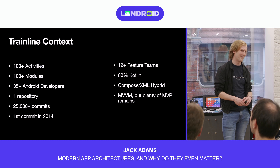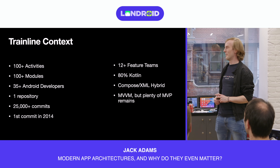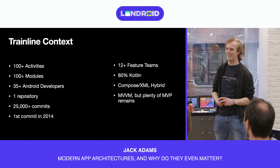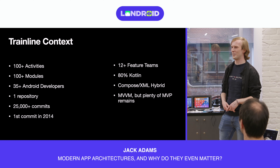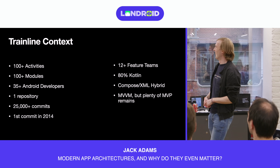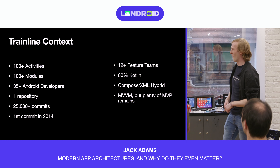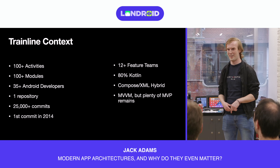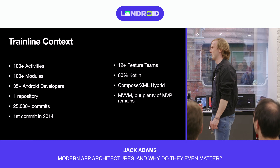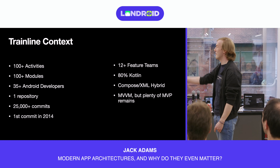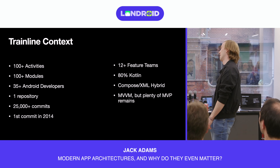I mentioned context is important, so let me give you a bit of context about Trainline. I opened our project this morning — I stopped counting after a while, but I searched for Activity and there were over a hundred. They have over a hundred modules, 35 developers, all committing to one repository that has 25,000 commits — and those are just merges, so it doesn't count commits on feature branches. The first commit was in 2014 and we have 12 teams working on the app right now.